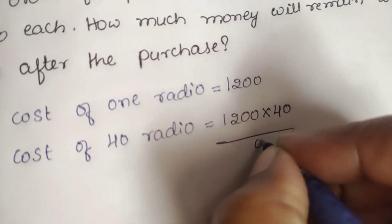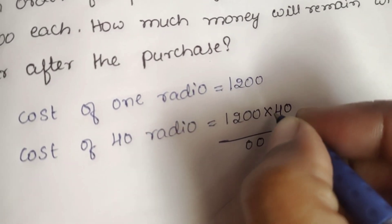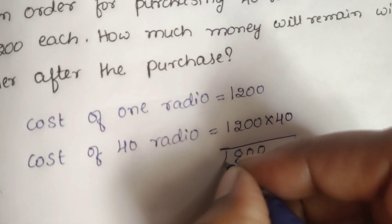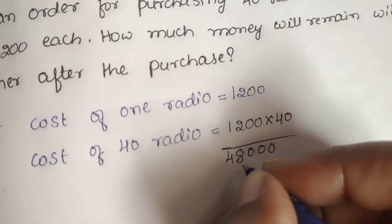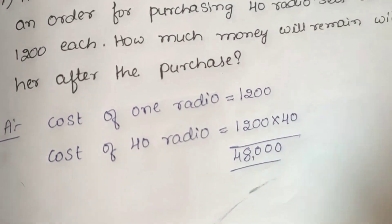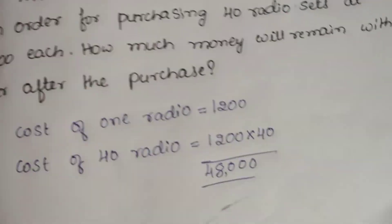So, 4×0 is 0, 4×0 is 0, 4×2 is 8, 4×1 is 4. So, 48,000. 40 radios is equal to 48,000.